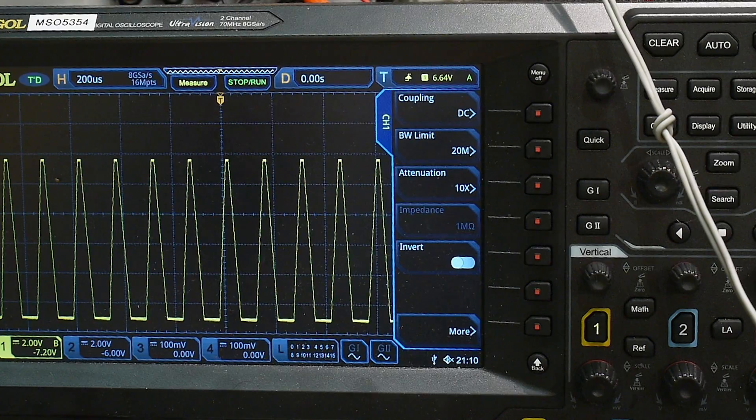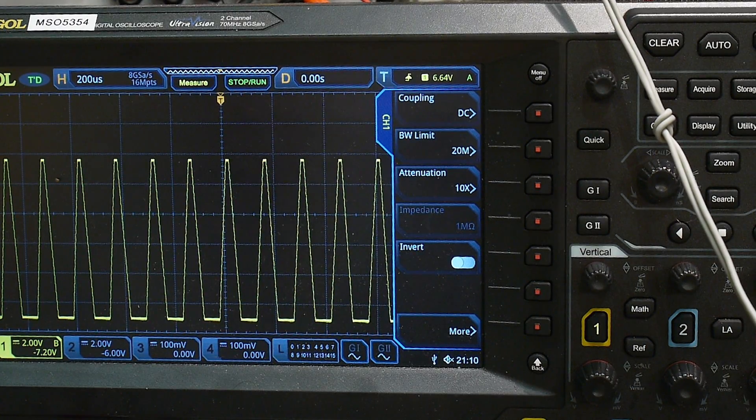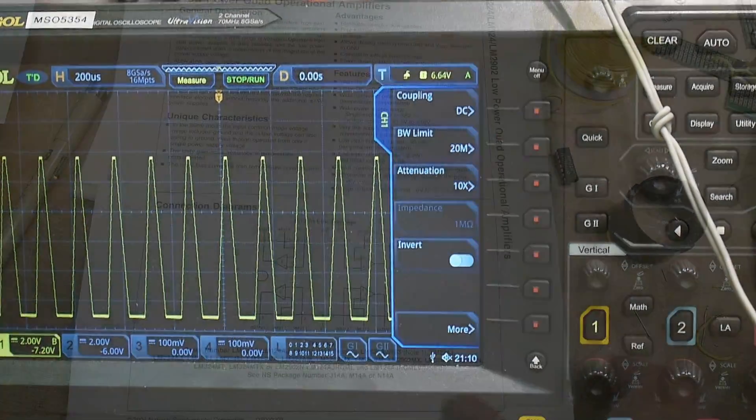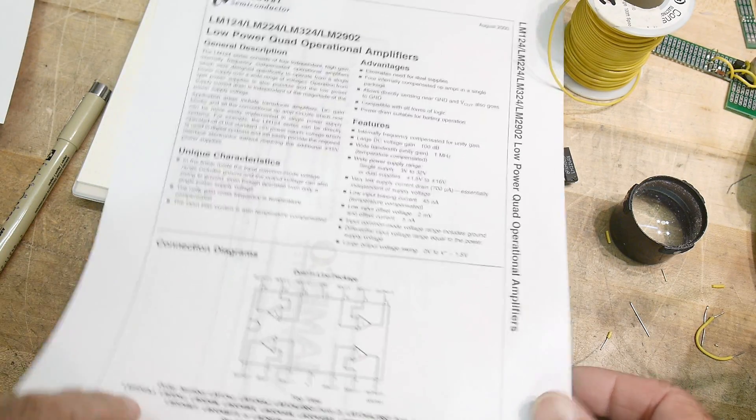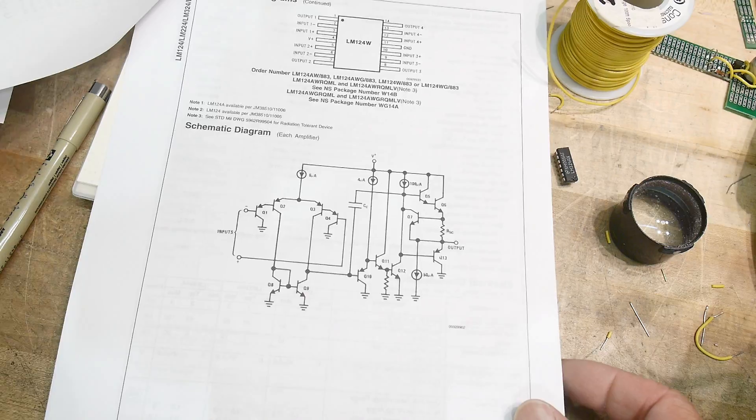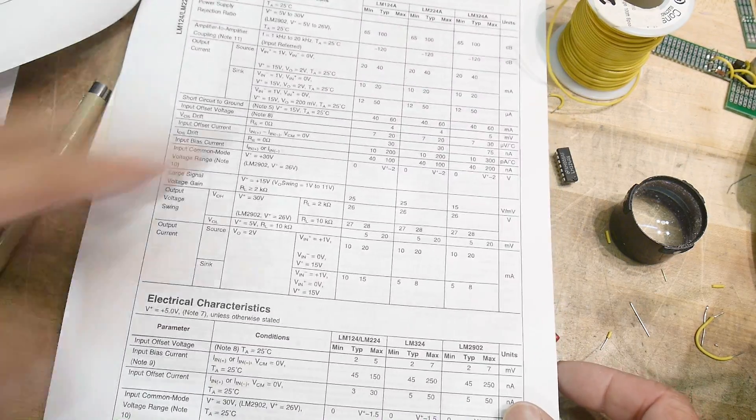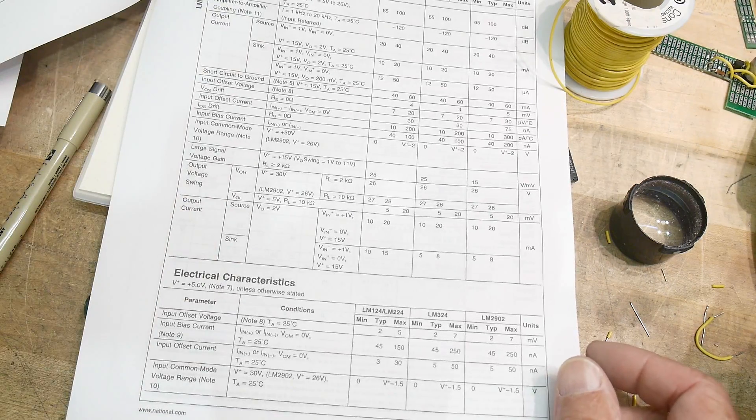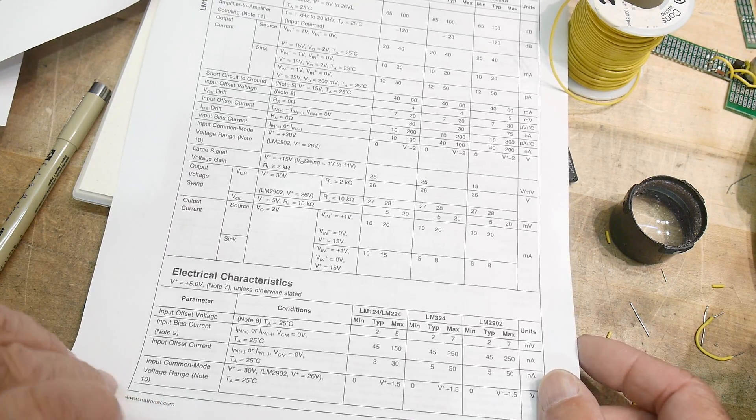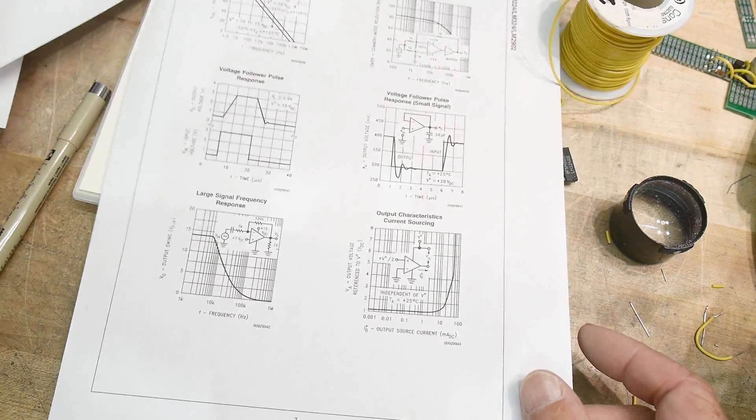Let's take a look at the datasheet. You read the datasheet - it mentions nothing about slew rate on the front. If I go through all of these numbers, there's no slew rate anywhere in the numbers.